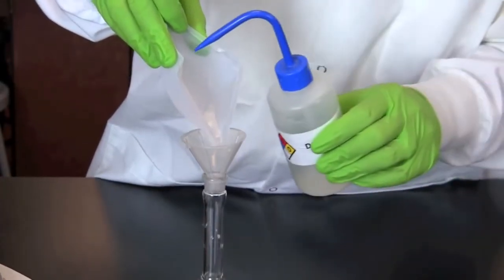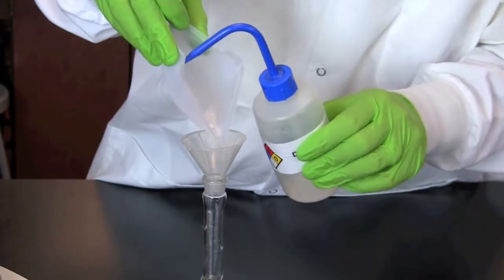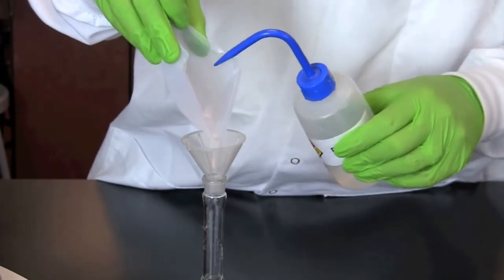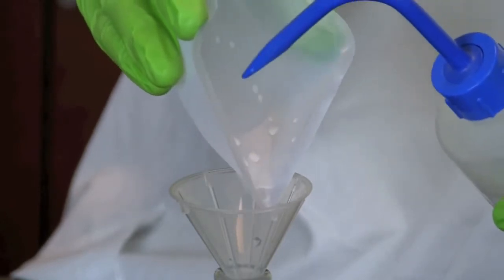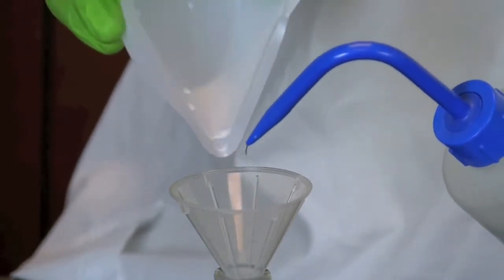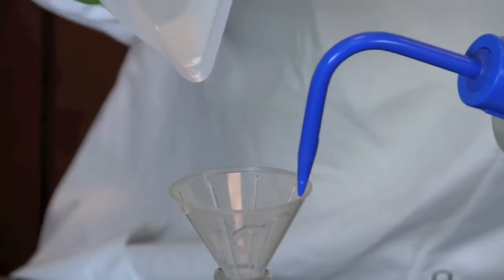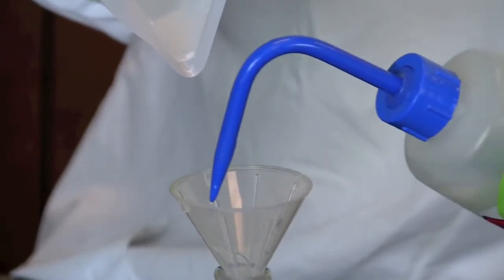Use a squirt bottle filled with distilled water to rinse the remaining sodium chloride crystals from the weigh boat into the funnel. Notice that the weigh boat is hydrophobic and repels water. Also rinse the contents of the funnel into the flask.